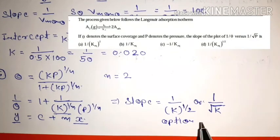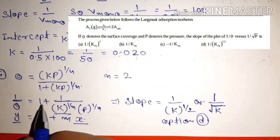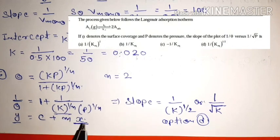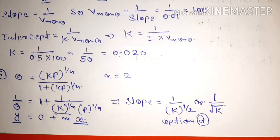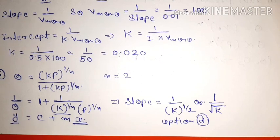The answer to this GATE 2015 question is option D: slope = 1/√k. So these were some surface chemistry questions asked in GATE exams. I hope you understood them. If you have any difficulty, please ask in the comment section. Thank you friends for watching.